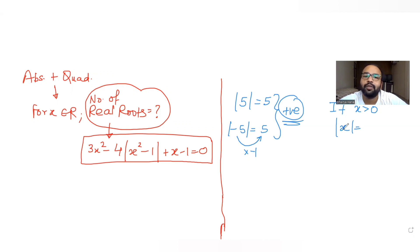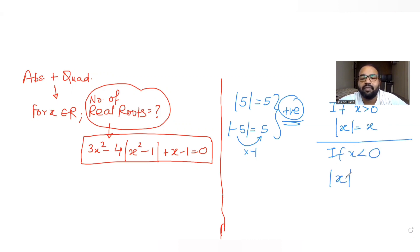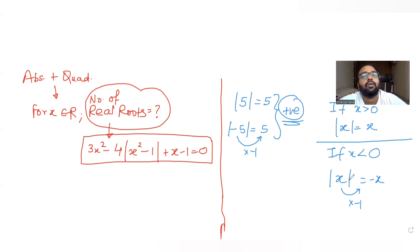So if x is greater than 0, mod of x — whenever something is positive within the mod, we write it as it is, so it becomes x. But if x is less than 0, the value inside the mod is negative, so we multiply the entire expression to get minus x. It looks like a negative value but it's actually positive, because x is also less than 0, so negative times negative makes it ultimately positive.